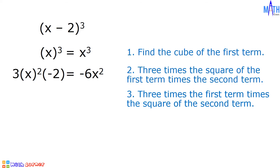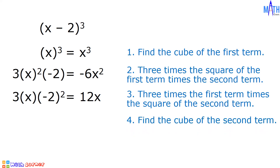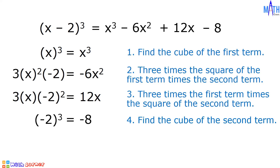Step number 3: 3 times the first term times the square of the second term. We have 3 times x times square of negative 2. 3 times x equals 3x. Square of negative 2 is equal to positive 4. 3x times 4 equals 12x. Last step: the second term is negative 2. Cube of negative 2 equals negative 8. And the cube of x minus 2 equals x cubed minus 6x squared plus 12x minus 8.